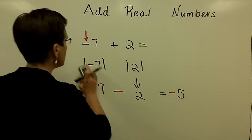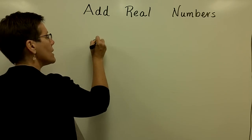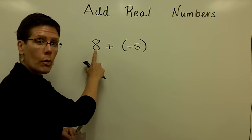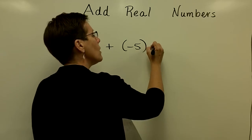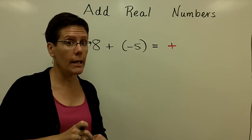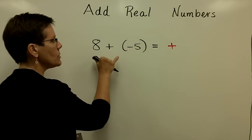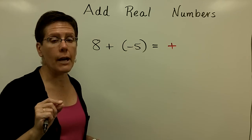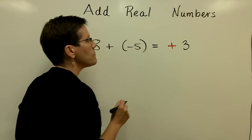Let's do one more — I won't write down the absolute value brackets this time. If I start with positive 8 and add negative 5: the absolute value of 8 is larger than the absolute value of negative 5, so this one has more pull and I know my final answer is going to be positive. It is not necessary to write a plus sign when the answer is positive. Because this one has more pull and I'm adding two numbers with different signs, I subtract their absolute values. 8 and 5 are their absolute values; I subtract them and get 3.